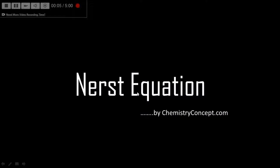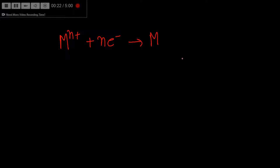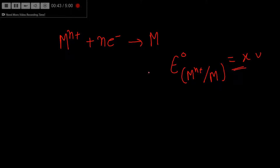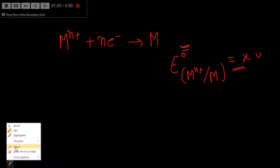Welcome to Chemistry Concepts. Today we are going to study the Nernst equation. The question is: what is the use of the Nernst equation? Let's say we have an electrode in which a metal ion takes some electrons and converts into metal. For this electrode, we have a standard electrode potential, which we can find from the electrochemical series table. But that standard value is obtained only when we use standard values of concentration, temperature, etc. What if we use a concentration other than the standard? For that, we use the Nernst equation.